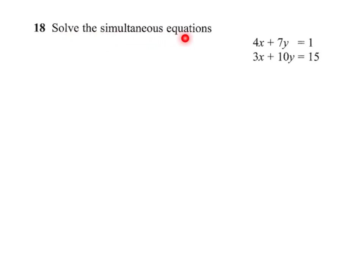We'll solve the simultaneous equations: 4x plus 7y equals 1, and 3x plus 10y equals 15.